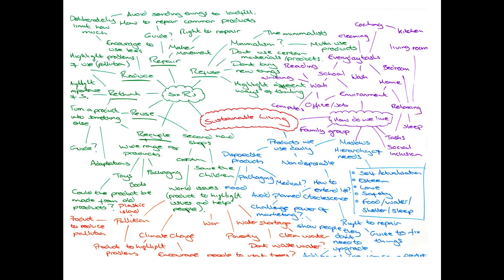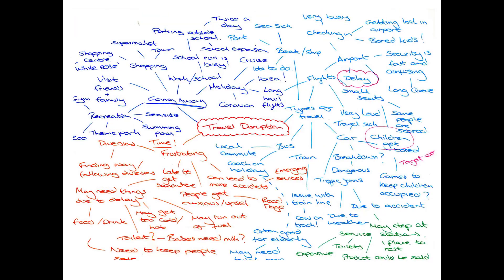Once you've done the first mind map, move on to the second and third — this will take at least an hour. Jot down any creative ideas or thoughts regardless of how feasible or crazy they may seem. For example, in the mind map about travel disruption, one thought was about people needing the toilet when stuck in motorway traffic — an idea that could become a neat design concept. Essentially, you're showing off your existing knowledge and thoughts about the possible project areas.